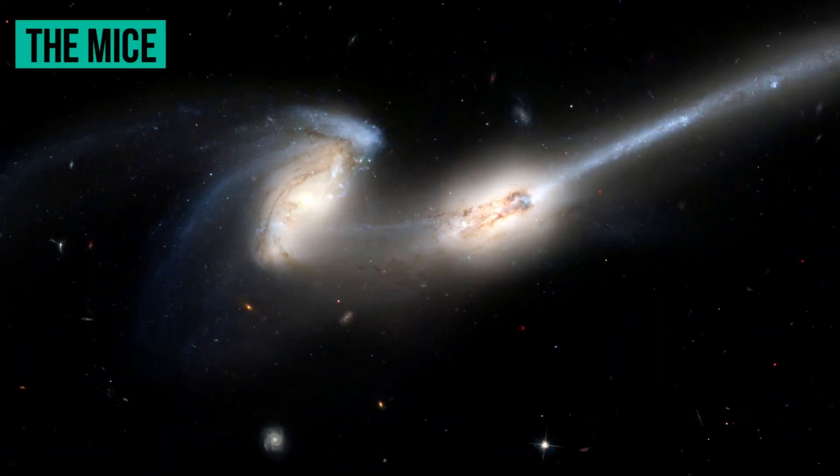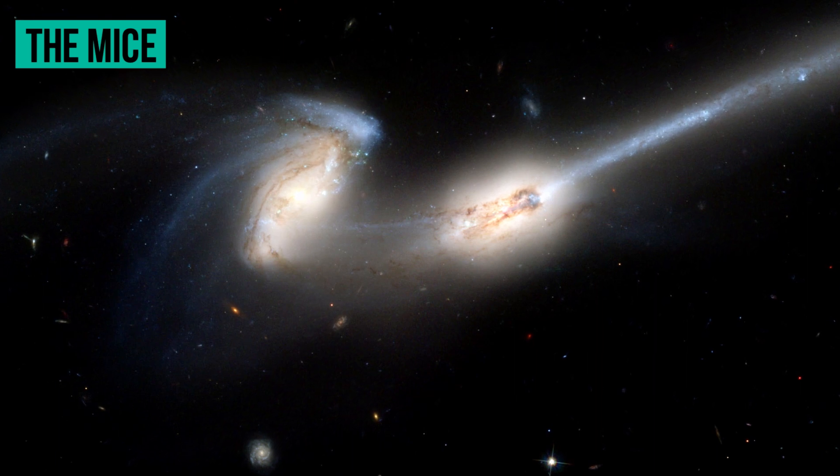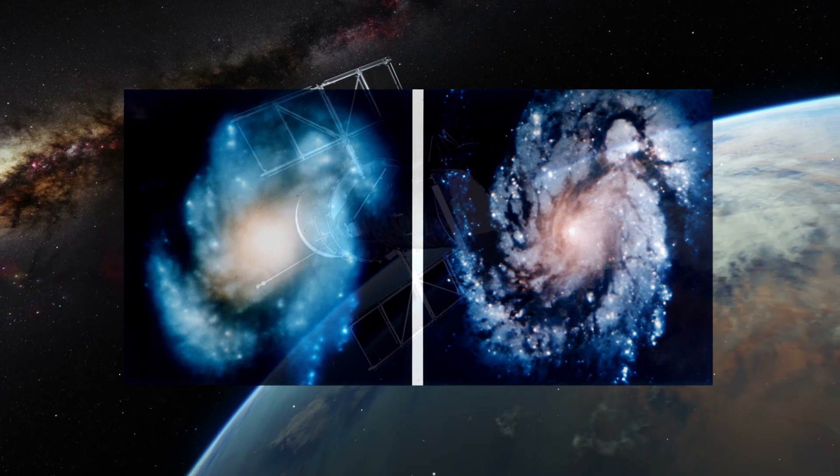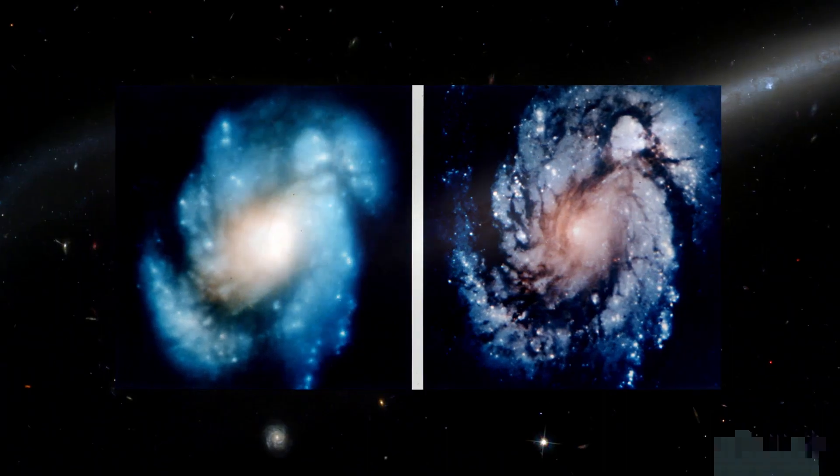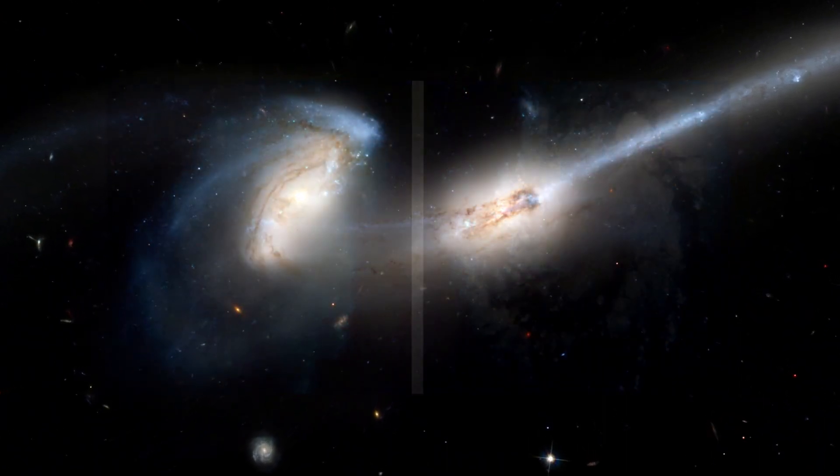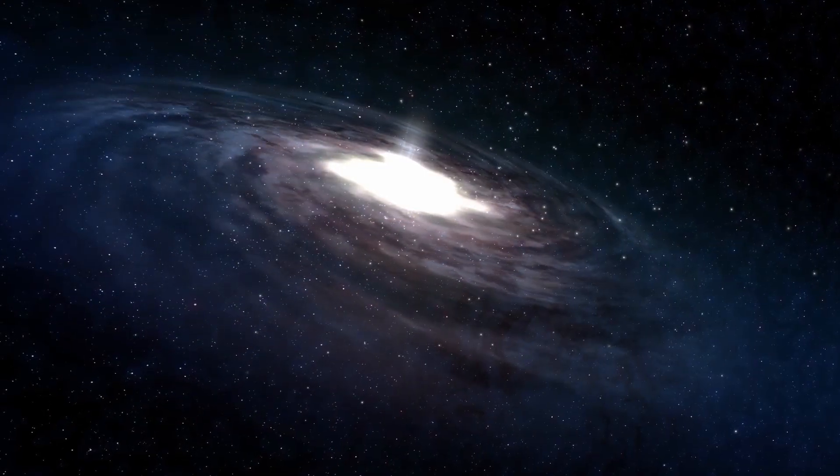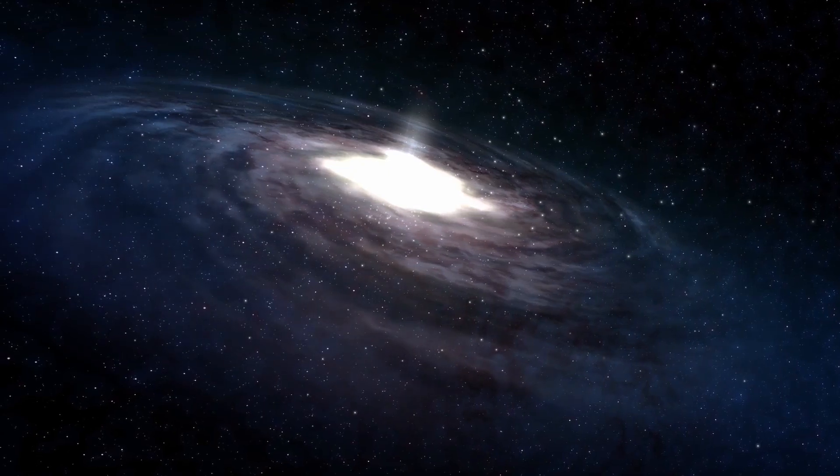One such merger, called the MICE, consists of two spiral galaxies colliding about 290 million light-years away, photographed by the Hubble telescope in 2002. These two galaxies may eventually become one, and have provided insight into what the collision of our galaxy, the Milky Way, and Andromeda might be like in the distant future.